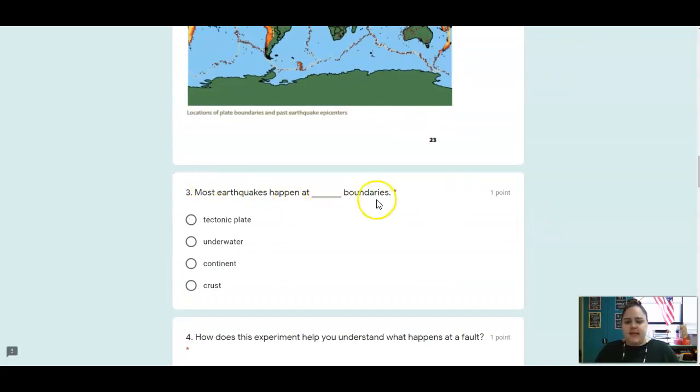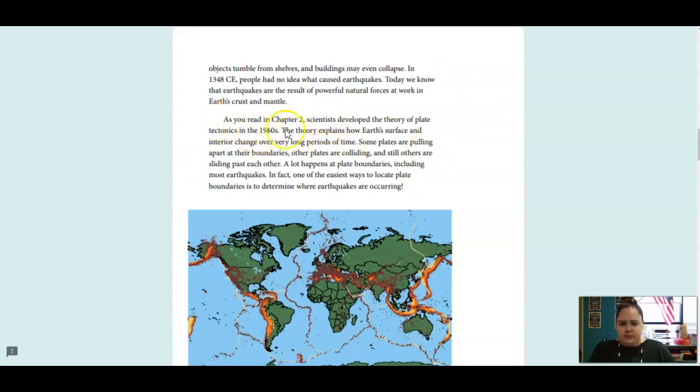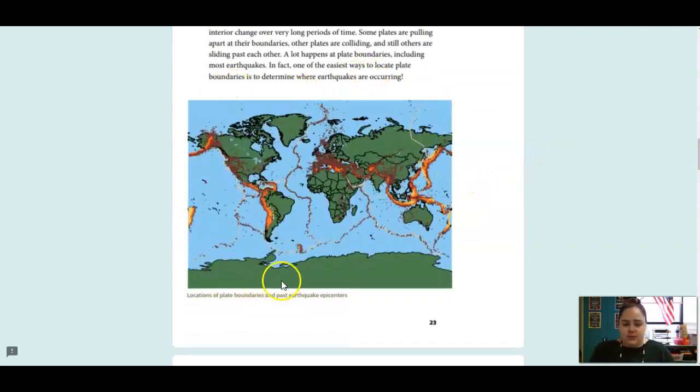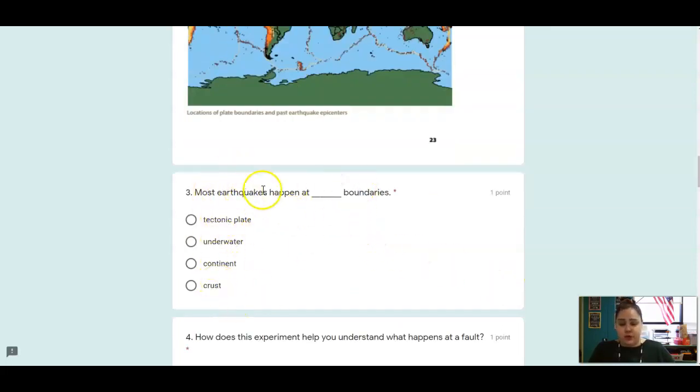We're looking at most earthquakes happen at blank boundaries. Scientists developed the theory of plate tectonics in the 1960s. The theory explains how Earth's surface and interior changed over long periods of time. A lot happens at plate boundaries, including most earthquakes. In fact, one of the easiest ways to locate plate boundaries is to determine where earthquakes are occurring. This map shows us the locations of those plate boundaries and centers of previous earthquakes.